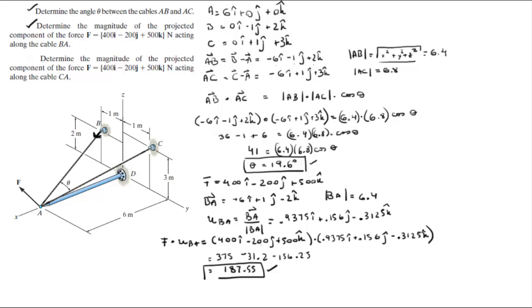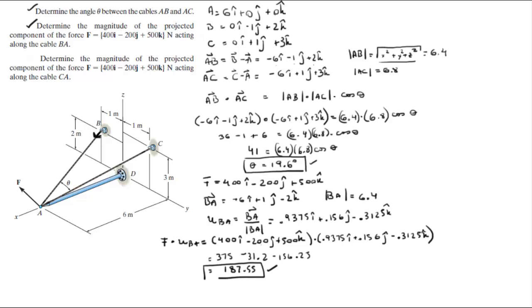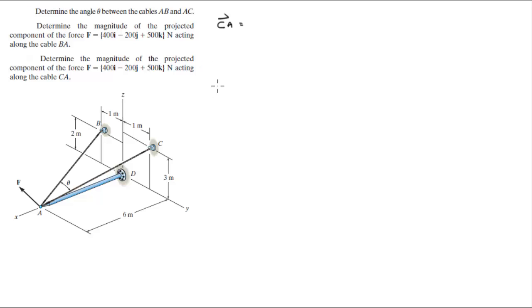Now we are going to do the third part. And for that let me put this in the back page. Now vector CA is the same as vector AC which is just backwards and it has the same magnitude.